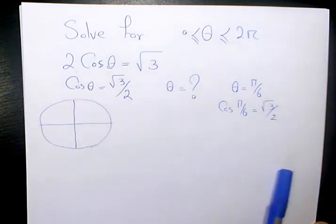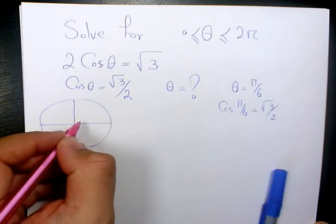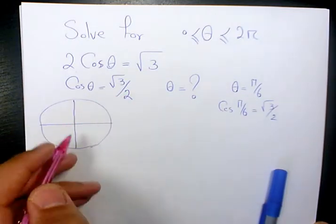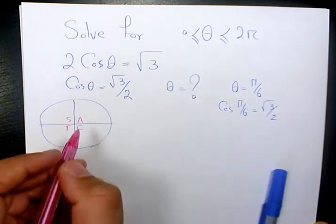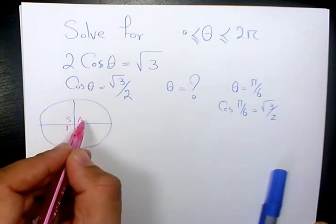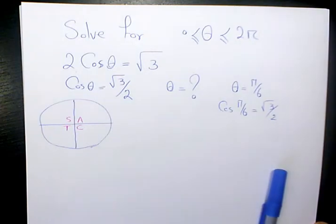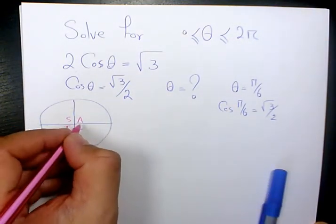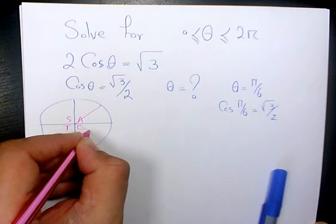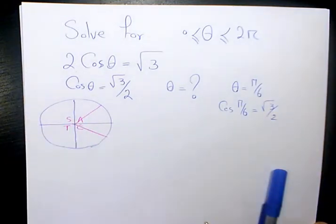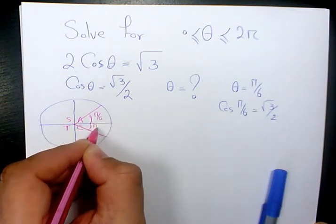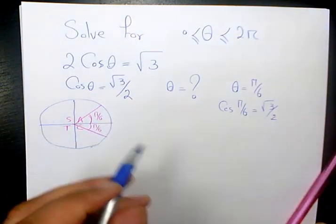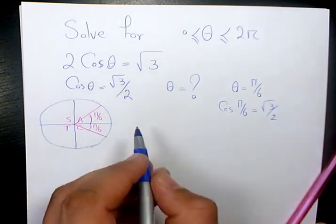We know cosine theta is positive in quadrant 1 and quadrant 4 based on the CAST rule. C stands for cos and A stands for all. It means that sine, cosine, and tan are positive. So in quadrant 1 and quadrant 4 cos is positive. So one answer is pi over 6. Here is pi over 6 as well.